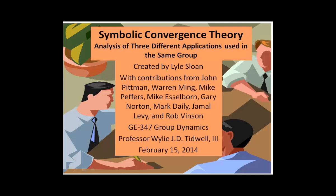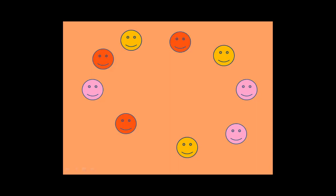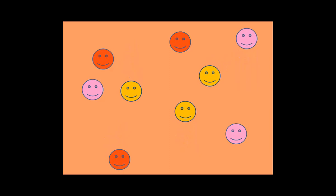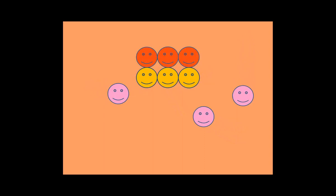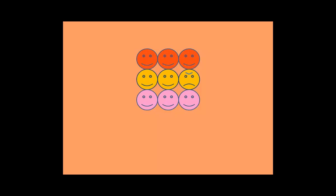Symbolic Convergence Theory: an analysis of three different applications used in the same group. In a learning environment, forming a group is usually easy because the professor oftentimes assigns people to work together. Once that group is formed, how do individuals within the group come together to become interdependent? What binds them within that group? What causes collective behavior to achieve a goal together? In the subject of group dynamics, this binding is known as convergence.